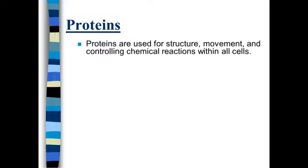Proteins are used for structure, movement, and controlling chemical reactions within all of our cells. Cells are the basic unit of living things — the smallest unit that has all the characteristics of living things. Proteins are not only involved in structure, but they are what allow us to move. There are specialized proteins called enzymes that control the chemical reactions within our bodies, as well as give our cells their shape and structure.